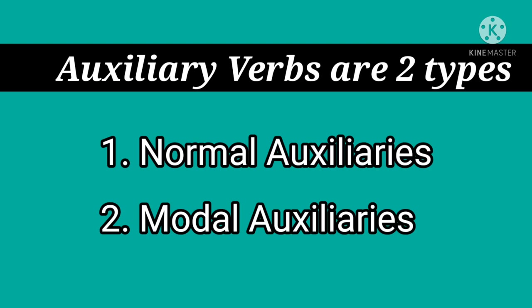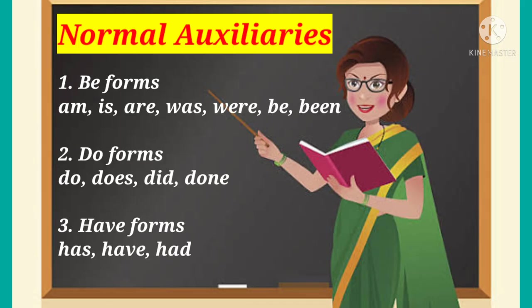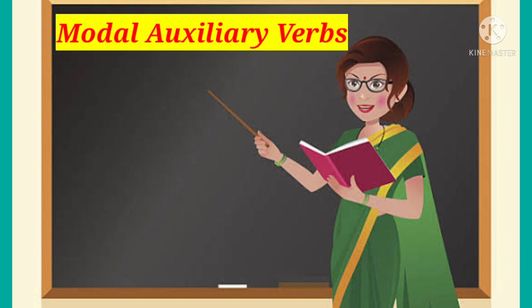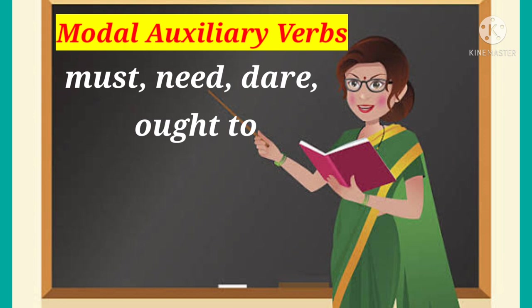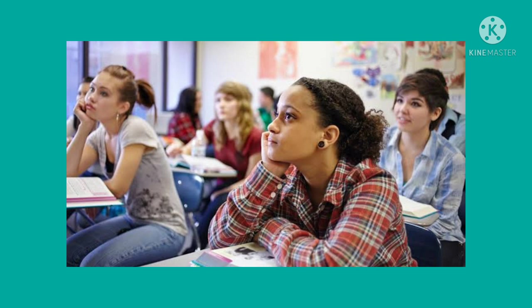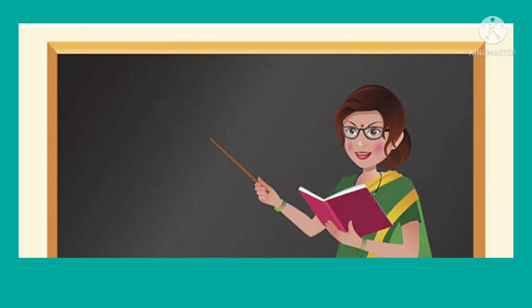Auxiliary verbs are of two types: normal auxiliaries and modal auxiliaries. Normal auxiliaries are three types — be-forms: am, is, are, was, were, be, been; do-forms: do, does, did, done; have-forms: has, have, had. Modal auxiliaries are four pairs: can/could, will/would, shall/should, may/might, plus must, need, dare, and ought to.